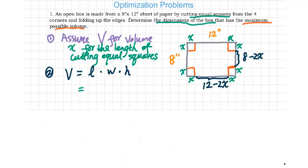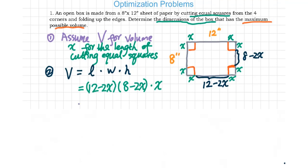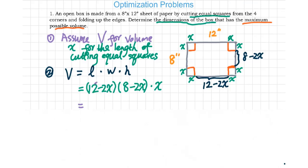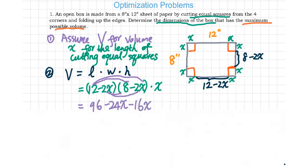Therefore, we can write down 12 minus 2x and 8 minus 2x, then times x. We need to expand these expressions by doing the FOIL. It will be 12 times 8 and 12 times negative 2x. It will be 96 minus 24x. Keep doing, you will get negative 16x plus 4x squared. Then you multiply by this x. We do the distributive property. You will get 96x minus these two combined like terms, it will be 40x squared plus 4x to the third power.